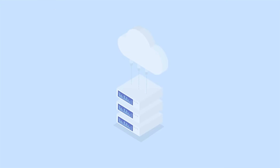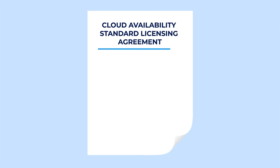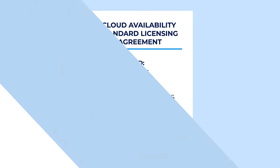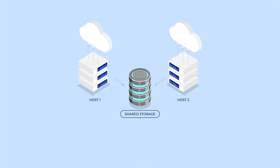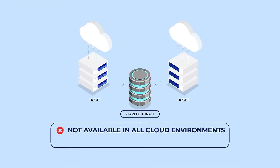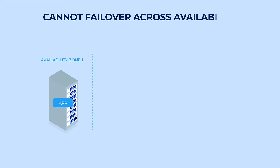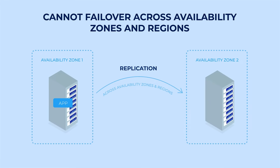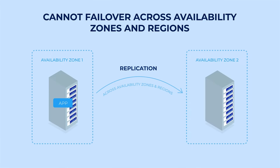Moving to the cloud isn't the answer. Cloud availability SLAs only cover hardware — they can't provide HA and DR for stateful applications without degrading performance. Shared storage used in traditional on-premises clustering is not an option in some clouds, and too complex and costly in others. Many HA clustering solutions cannot failover across both cloud regions and availability zones, limiting the level of disaster recovery they can provide.